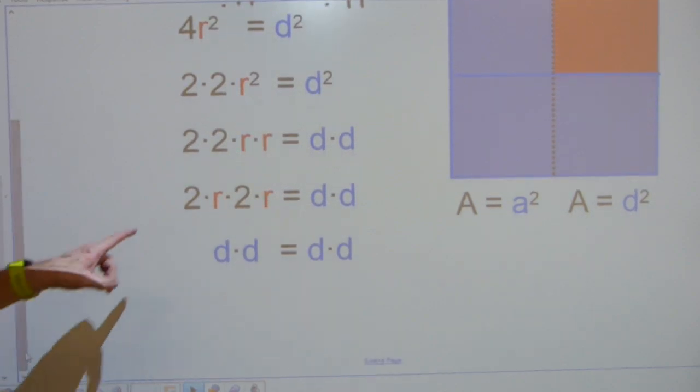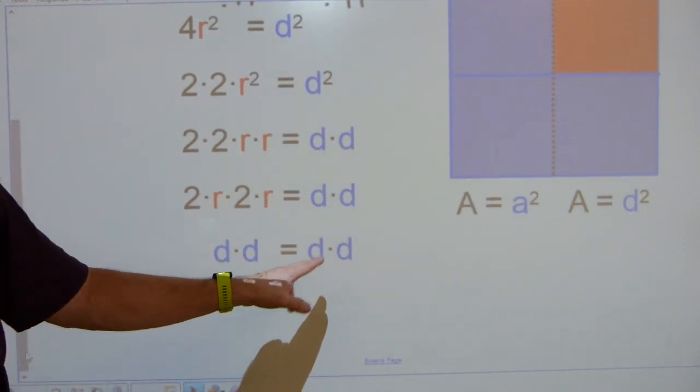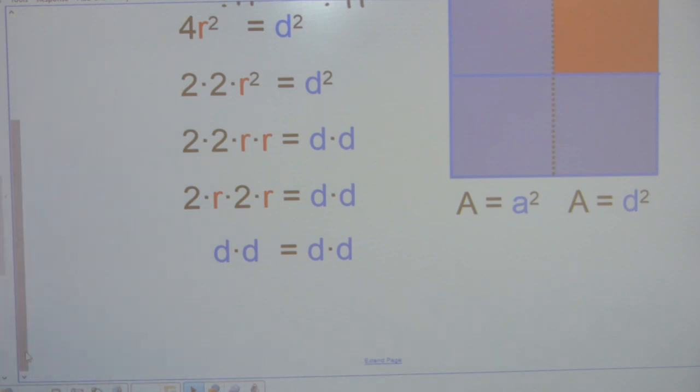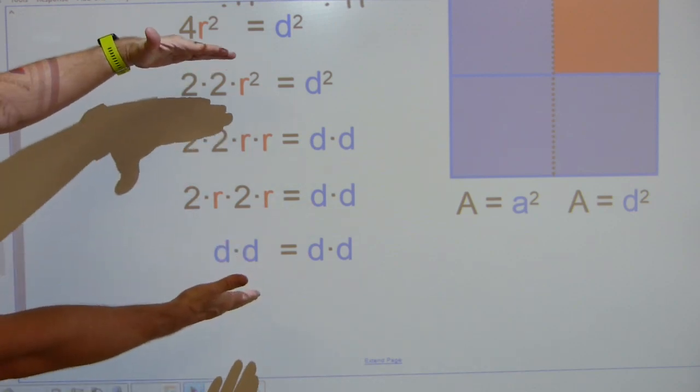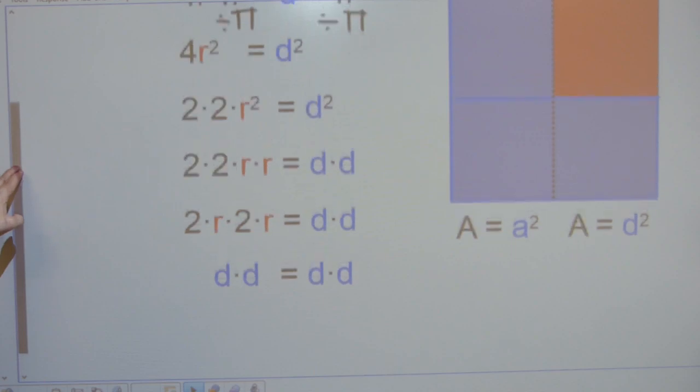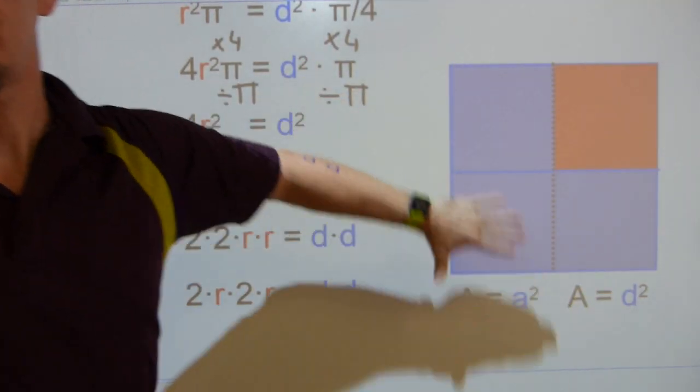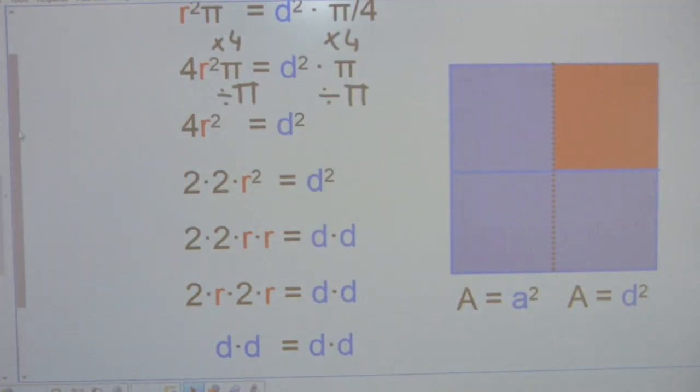There it is. This is the last step. Diameter times diameter is the same thing as diameter times diameter. So this lower part here just shows algebraically what this square arrangement here shows.